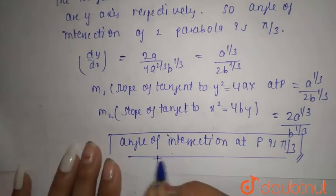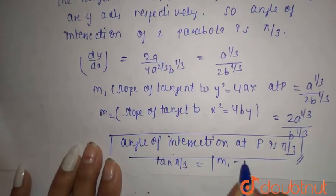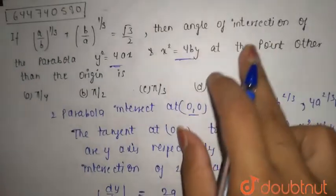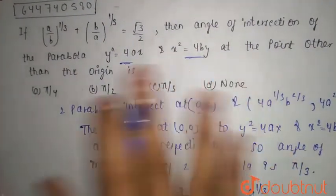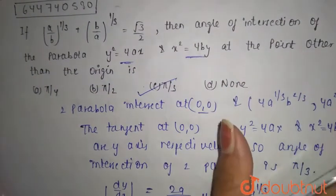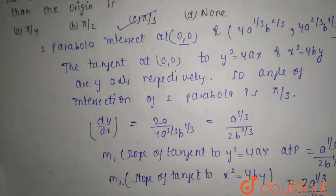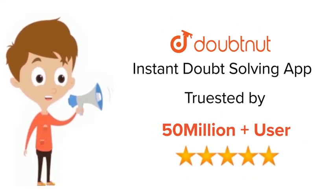We verify using tan(π/3) = (m₁ - m₂) / (1 + m₁·m₂). The question asks for the angle of intersection of the two parabolas, and the answer is π/3, which is option C. For class 6 to 12, IIT JEE, and NEET level — trusted by more than 5 crore students — download the DoubtNet app today.